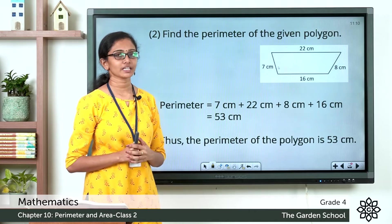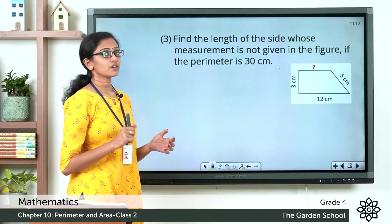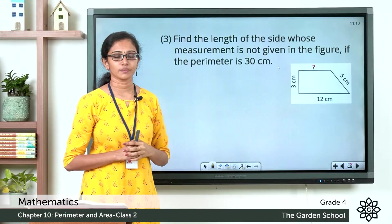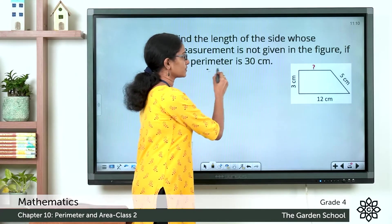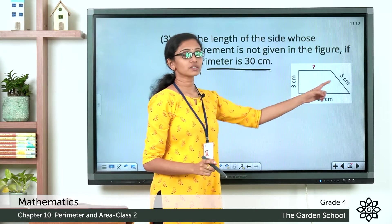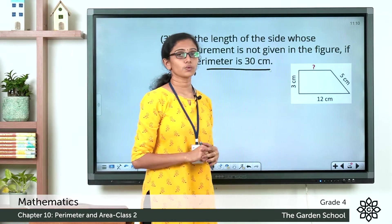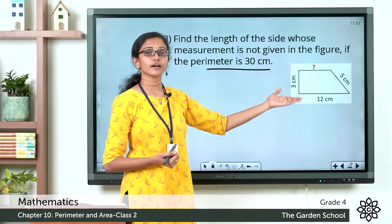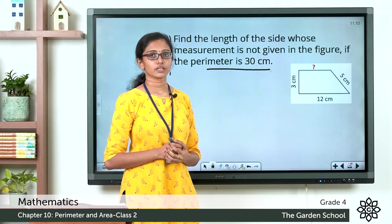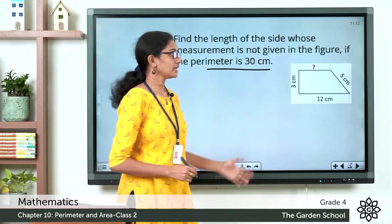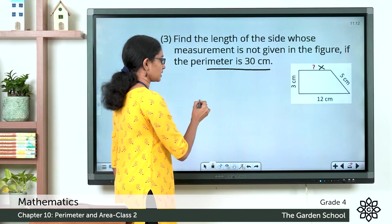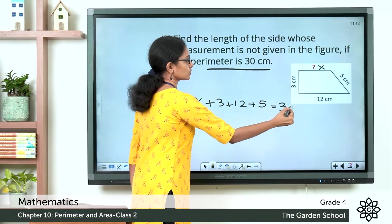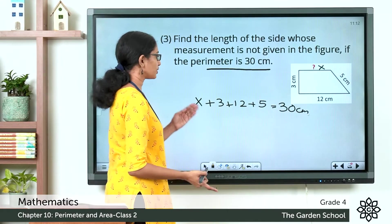I hope these examples are clear. Now we will see a different one. Find the length of the side whose measurement is not given in the figure, if the perimeter is 30 cm. The perimeter of the figure is given, and the lengths of three sides are given, but the length of the fourth side is not given. You are asked to find out the length of the fourth side. Suppose the length of the unknown side is x. By definition, x plus 3 plus 12 plus 5 is equal to 30 cm — the perimeter.